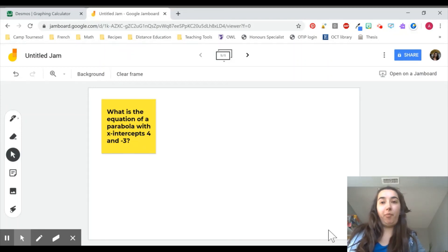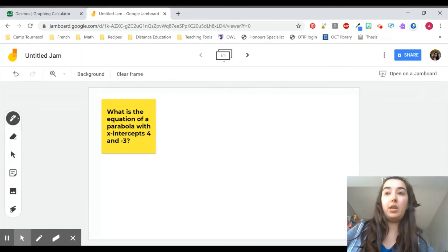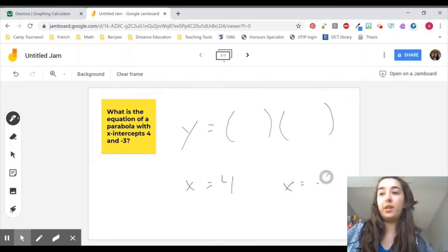Let's say you're presented with this type of a problem. What is the equation of a parabola with x-intercepts at 4 and negative 3? Well, you might think to yourself, okay, that's nice and easy. I can go ahead and say my parabola has to be equal to y is equal to two things such that x is equal to 4 and x is equal to negative 3.